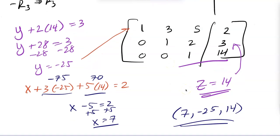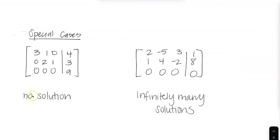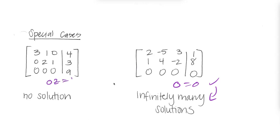Since we're solving linear equations, there are two special cases: no solution or infinitely many solutions. If the bottom row gives 0 = 0, that's a true statement, so infinitely many solutions. If the bottom row gives 0 = 9, that's false — no solution. Just like solving linear equations normally, a true statement means infinitely many solutions and a false statement means no solution.